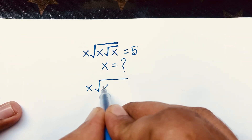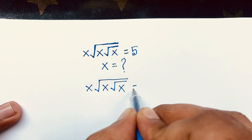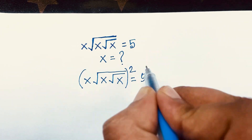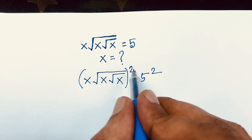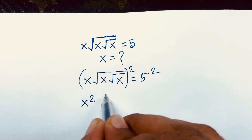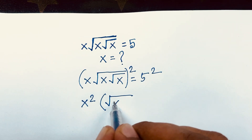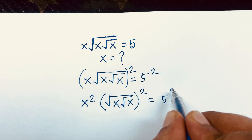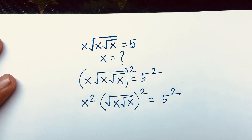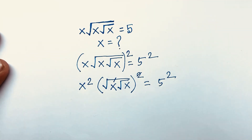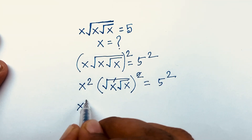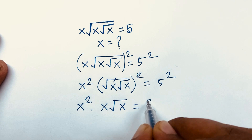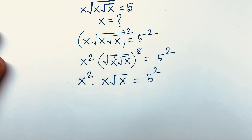I use both sides whole square, so it will look like x to the power 2, and in this case square root x square root x bracket to the power 2 is equal to 5 to the power 2. Then the square root is cancelled and we get x squared times x times square root x is equal to 5 to the power 2.